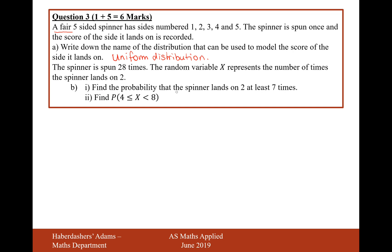Part bi is find the probability that the spinner lands on 2 at least 7 times. So that's 7 or more.